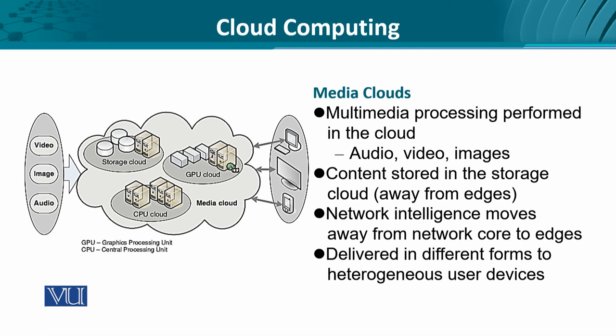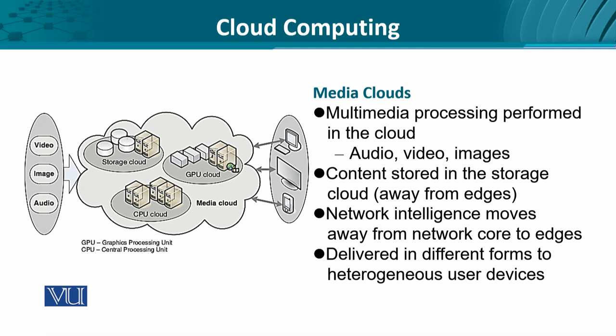Here's something interesting: the content is being created at the edges and pushed into the network, while the intelligence to provide this content is moving away from the network back to the edges. The edges are now determining where the content has to be placed. This is a big move from the classical router-based architecture, where the router would determine where to forward data. This media cloud is an excellent example in which heterogeneous user devices like smartphones, tablets, and desktops can access and process multimedia content elsewhere and get the results.